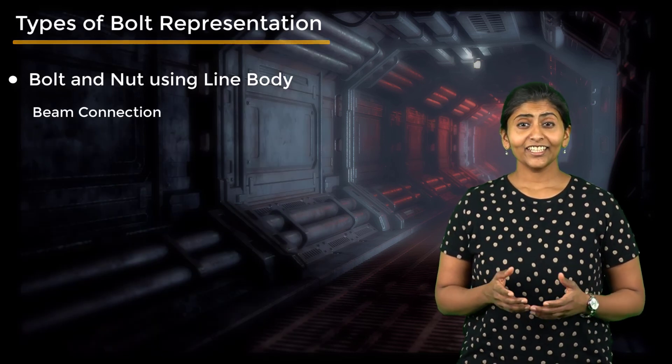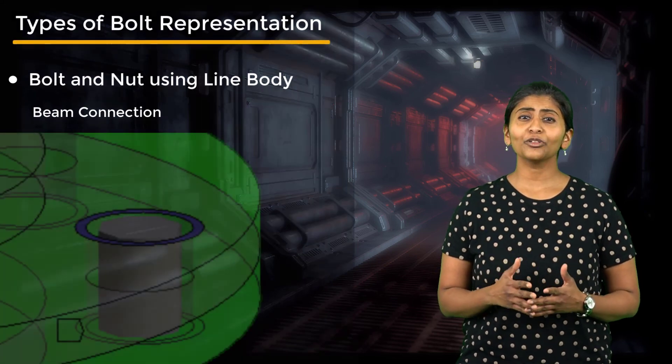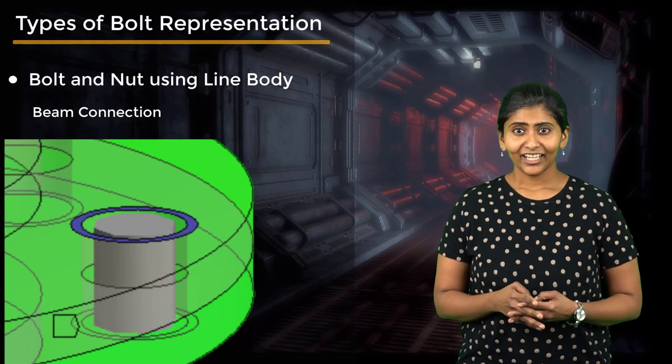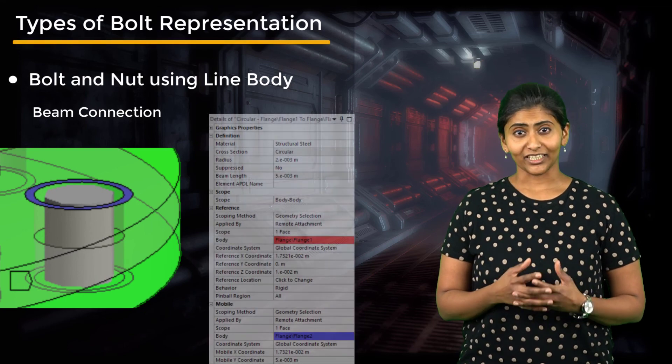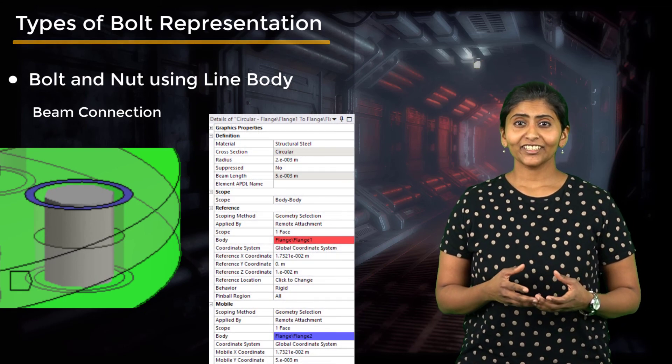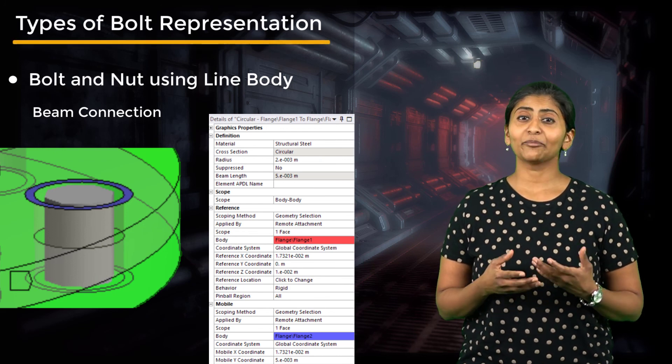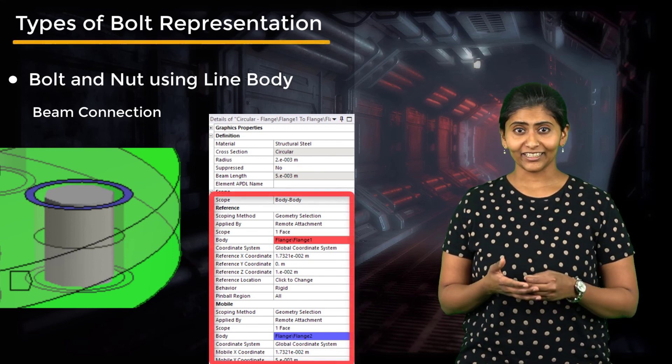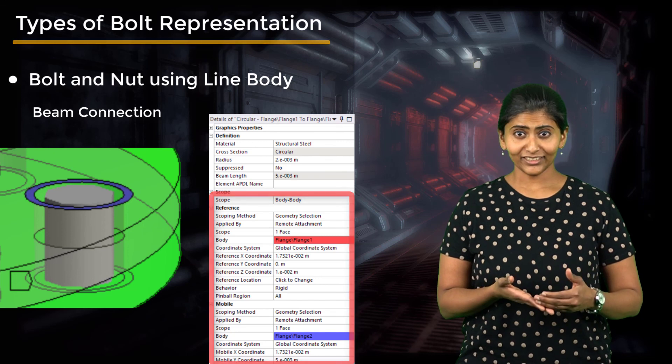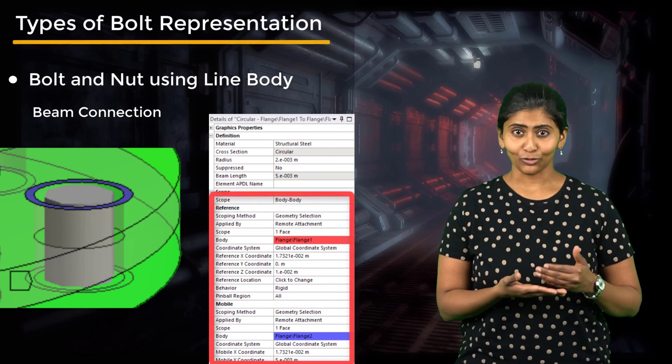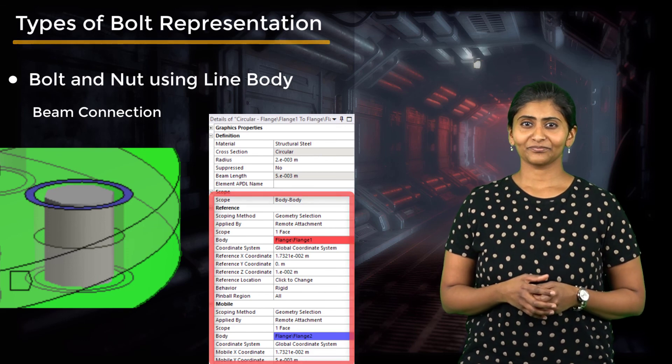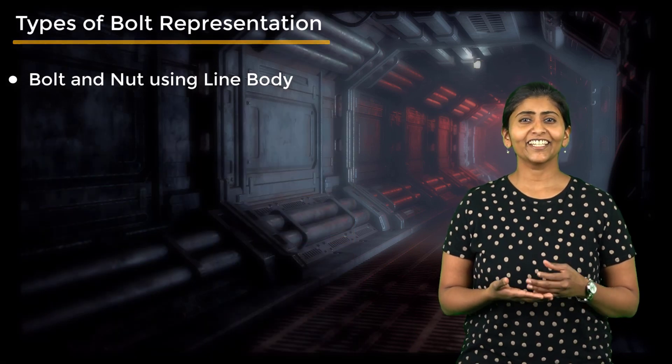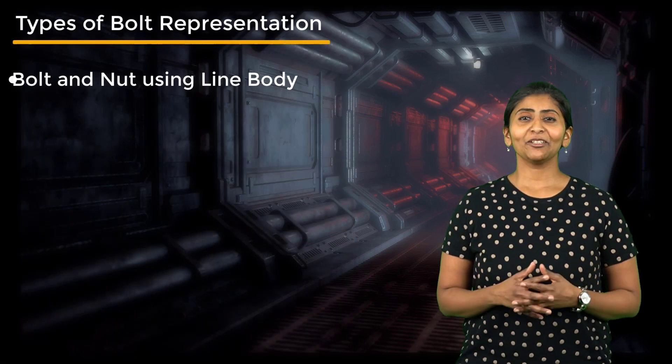The last technique is to create a beam connection without using any line geometry. In the contacts definition of Ansys Mechanical, there is an option to create beam connections where we can define the beam cross section radius and material properties. The beam is scoped to the selected entities such as plate hole edges or the inner surface of the plate holes using remote points. This technique is more convenient as it doesn't require creating line bodies, thus saving preprocessing time.